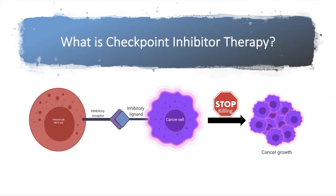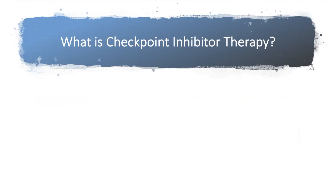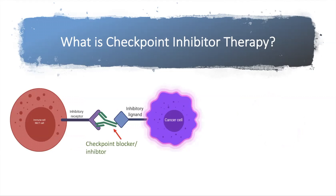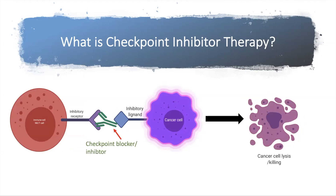Checkpoint inhibitors, or checkpoint blocking therapy, is simply a drug — usually monoclonal antibodies — called a checkpoint blocker or checkpoint inhibitor, that blocks the inhibitory receptor to prevent engagement with the ligand on the cancer cell. This leads to release of the immune cells and ultimately leads to the lysis of cancer cells.